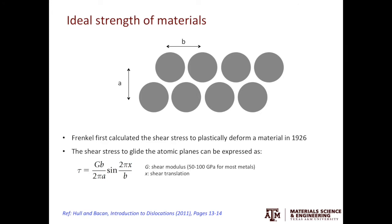It is a sinusoidal equation, so the maximum shear stress needed to glide the two atomic planes occurs when X equals B/2. In this case, the sine part equals 1, and the ideal strength of the material is GB / 2πA. In crystalline materials, A and B are comparable, so the ideal shear strength can be approximated as G / 2π.